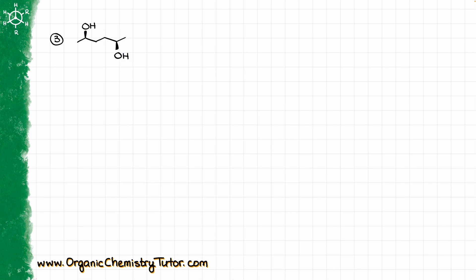And just to confirm our suspicions, let's draw a mirror image of this molecule. Let's say my vertical line over here is going to be the mirror plane, so I would get a molecule that looks like the following: I have my OH group over here on the left, and I have another OH group over here on the right side. Now, if I try to rotate it in space and do all different rotations — let's say I will try to rotate it in the plane of paper first.